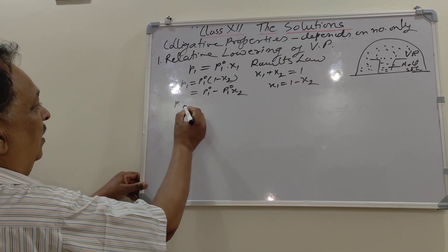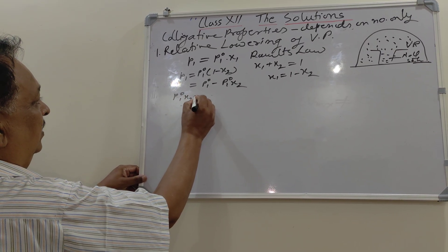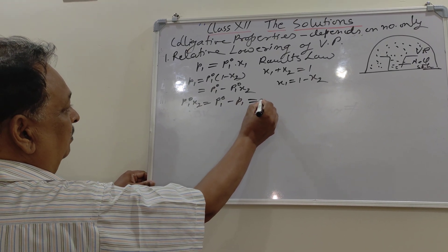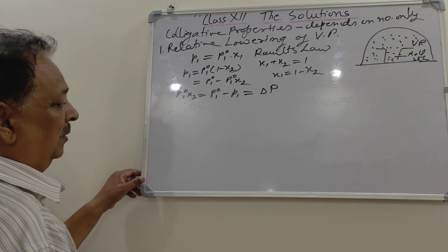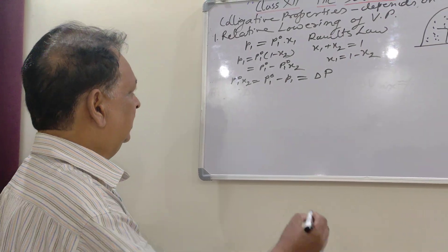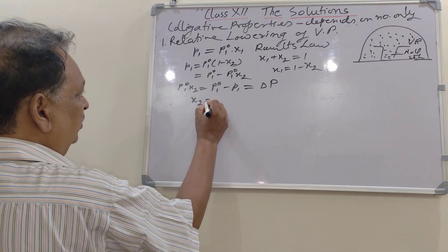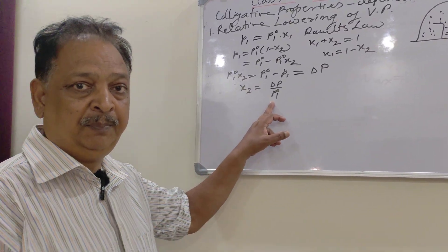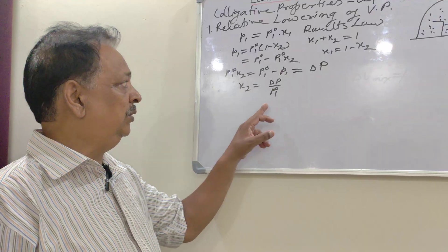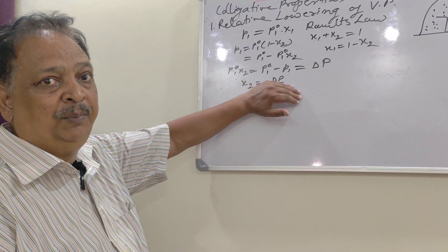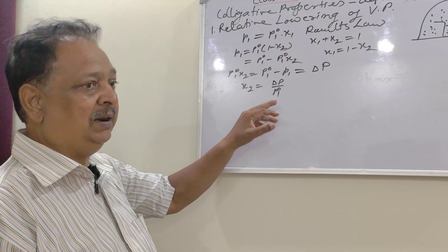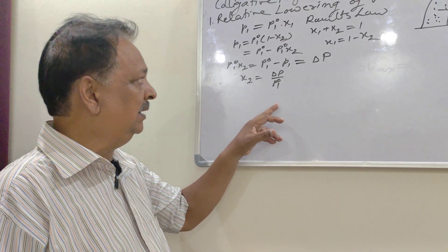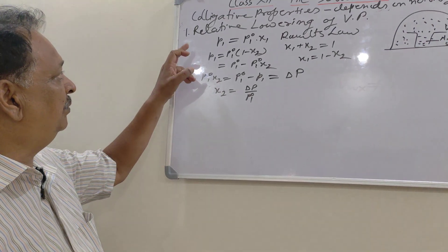Rearranging, we get P01 minus P1 equals P01·X2. This means delta P divided by P01 equals X2. Here P01 is the vapor pressure of pure water (pure solvent), delta P is the lowering of vapor pressure, and delta P upon P01 is called the relative lowering of vapor pressure, which equals X2, the mole fraction of the solute.